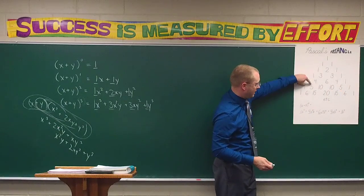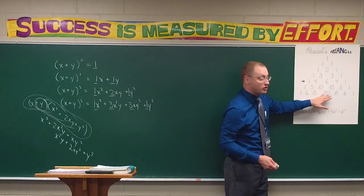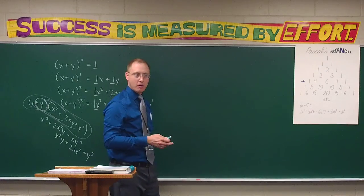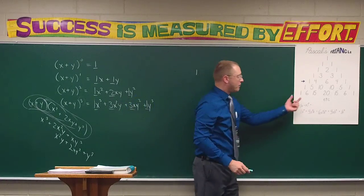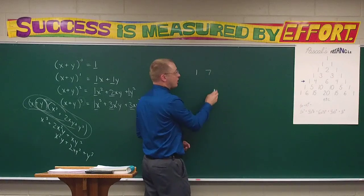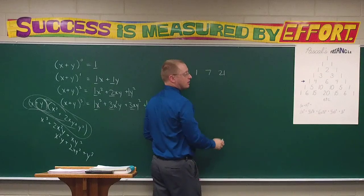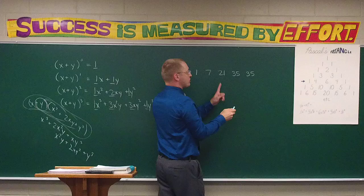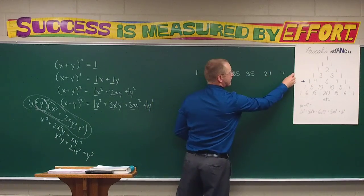Continuing: one and five gives six; five and ten gives fifteen; ten and ten gives twenty; ten and five gives fifteen; and so forth. What would the next row in the triangle have to be? Every row starts with a one. The next number would be seven; then twenty-one as we add six and fifteen; then thirty-five; then another thirty-five — the pattern repeats itself — back to twenty-one, and then finally one.